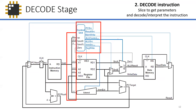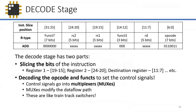The next step is the decode stage. The task is: I have an instruction, I'm going to slice it to get the parameters, and then send it to my control unit to decode and identify what control signals are needed. Two things: slicing and decoding. Slicing is just getting bits of the entire instruction — like getting elements of an array but for the bits. For example, register source one is bits 19 to 15.